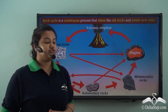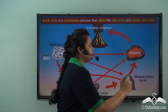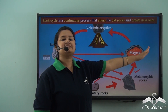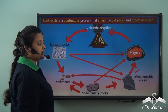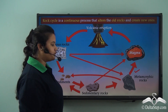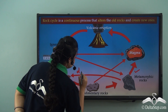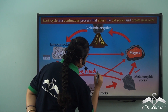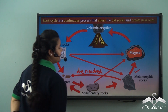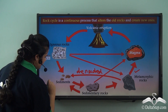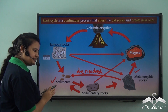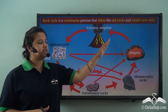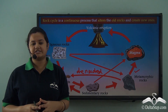Finally, let us deal with metamorphic rocks. As we already discussed, metamorphic rocks melt into magma. Again, these metamorphic rocks can be denuded by natural agents and form sediments. These sediments eventually form sedimentary rocks. So here we have the complete picture of the rock cycle.